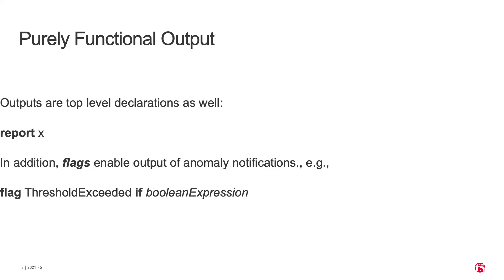Outputs are less difficult. There's an analogous top-level declaration — a report construct. You name a variable and it reports the value of that variable to the output. There's also a thing called a flag, which is used for anomaly detection — it's a boolean value. You declare it and make it dependent on a boolean expression, and if that expression is true, the flag is raised and reported to the output.